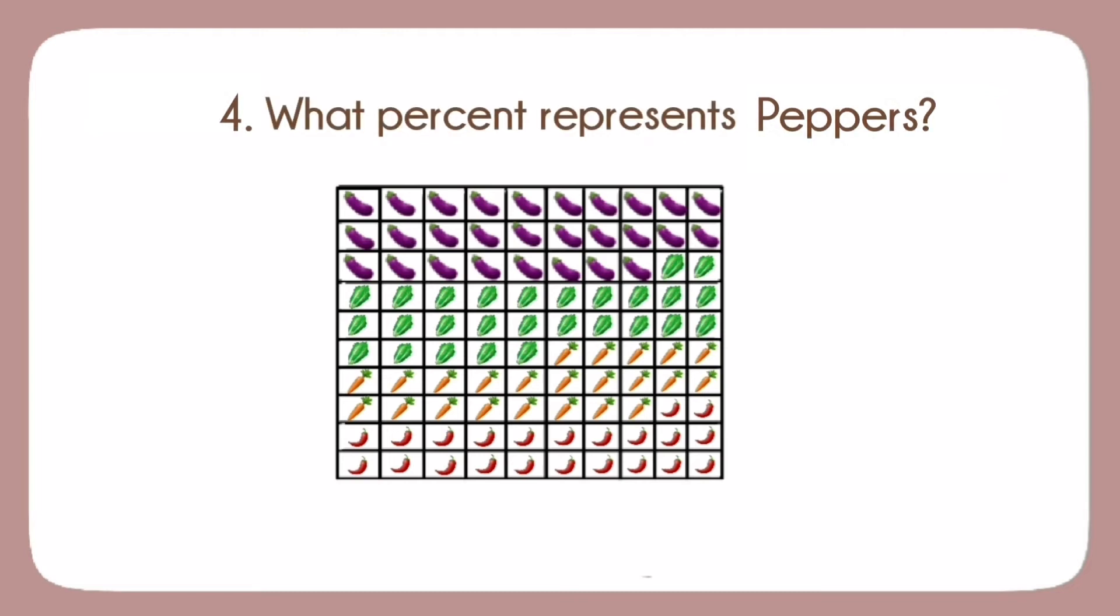4. How about the bell peppers? A. 33%. B. 20%. C. 27%. D. 22%.